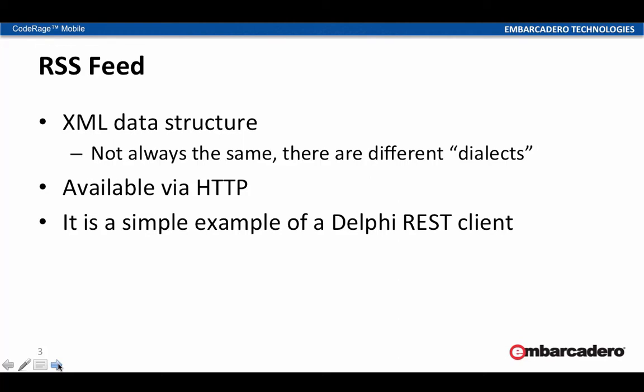An RSS feed is basically an XML data structure. There is an overall structure but then there are variations — there is RSS 1, 2, and there is ATOM. There are extended attributes that not all feeds have, but overall it has a common model. You access an RSS feed just by making an HTTP call. So overall, using a Delphi RSS feed is a simple example of building a Delphi REST client, and I'm going to show this example on Delphi XE4 for iOS.